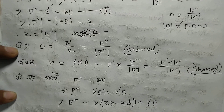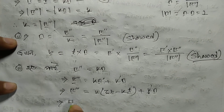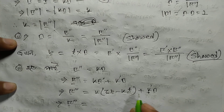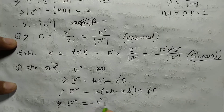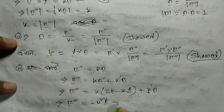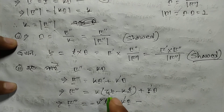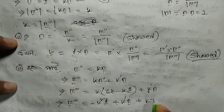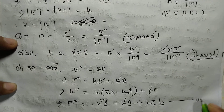So r triple prime vector equals: grouping terms — minus kappa squared t vector, plus kappa prime n vector, plus kappa tau b vector. We group the t, n, b components carefully. So the final expansion is: r triple prime = -kappa squared t + kappa prime n + kappa tau b.